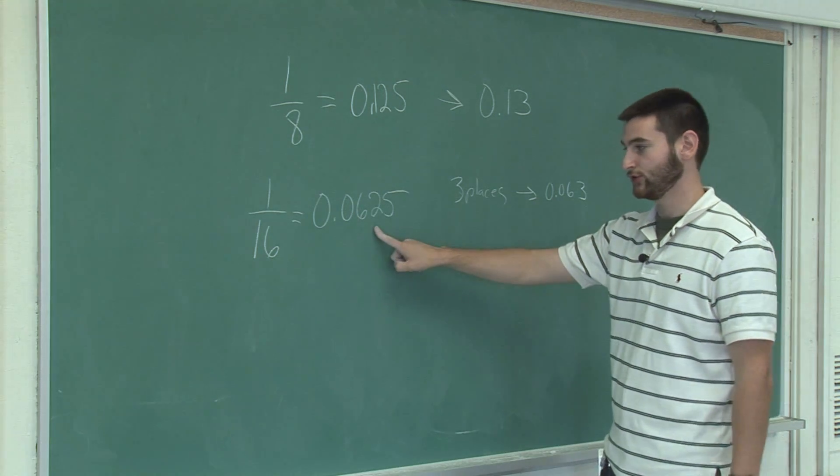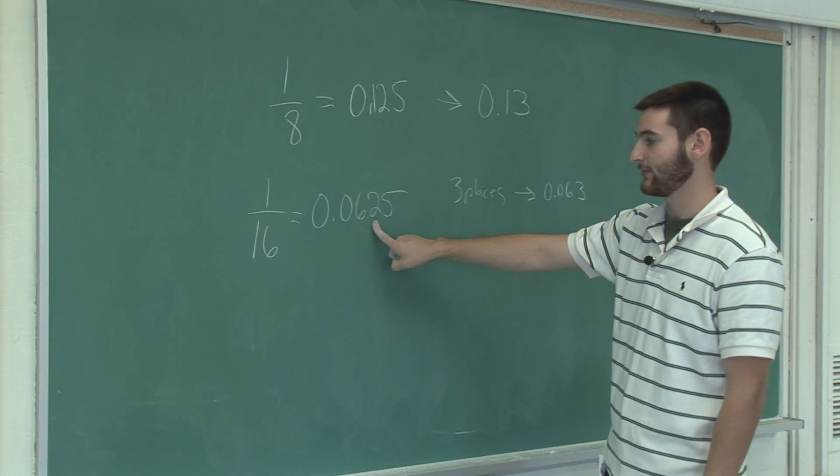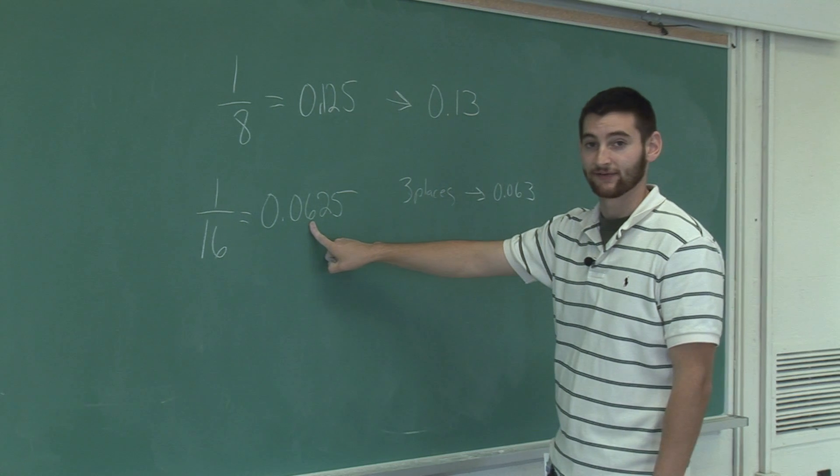If we were to round it to only two places, we would look at the six, and its neighbor is two, which is not high enough to go to the next number.